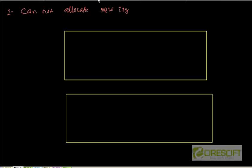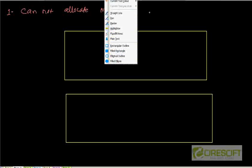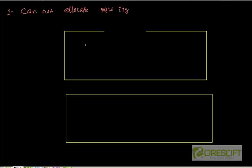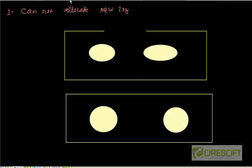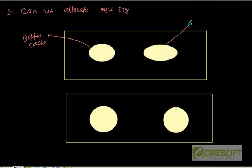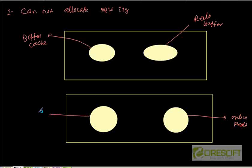So essentially this is the Oracle database. We have our buffer cache, and then we have our redo log buffer. We also have data files and the online redo. So let me write it down: this is my buffer cache, this is your redo buffer, this is my online redo, and this is my data files.